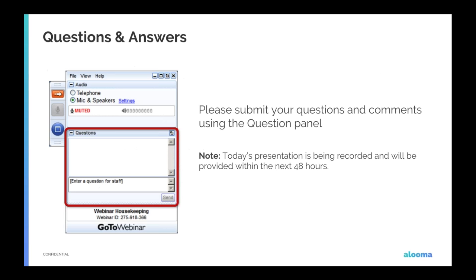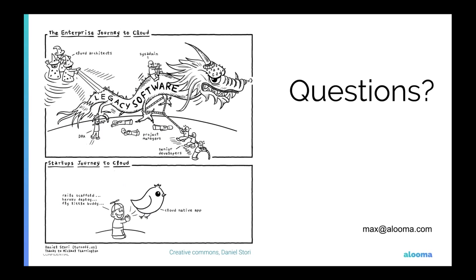Thanks so much, Max. As we head into Q&A, feel free to send questions. First question: you only showed one data warehouse — are there other data warehouses Aluma can work with? Aluma currently supports Redshift, Google BigQuery, and Snowflake out of the box, plus MySQL and MemSQL for certain customer needs. The platform is agnostic to which you use and works the same way with all three.